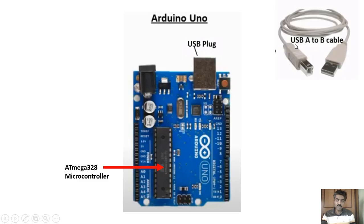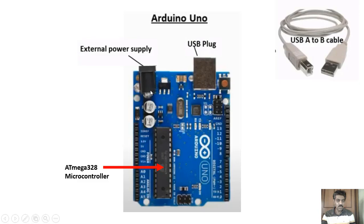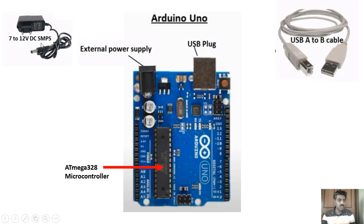Here you can see the USB A2B cable, which is exactly similar to the cable used in a printer — one end goes into the board and the other end into the computer's USB port. For external power supply, which may be required for the Arduino, the supply should be DC — 7 to 12 volt DC via SMPS — or you can also use a battery to provide power supply.